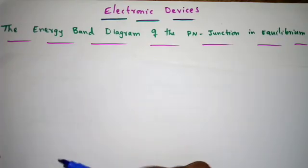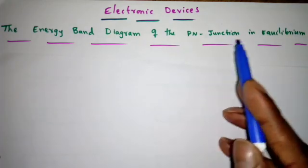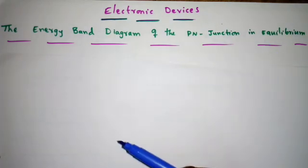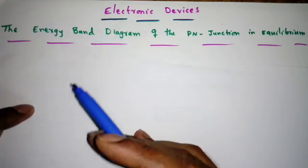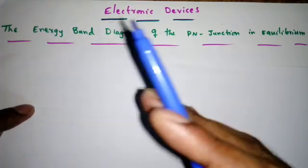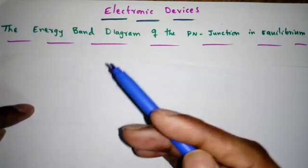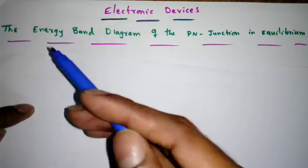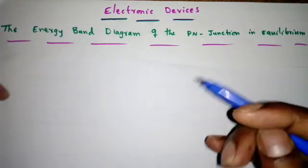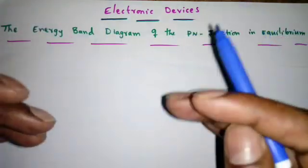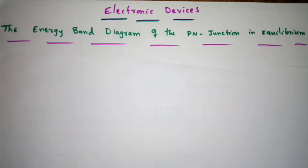In this lecture we will discuss the energy band diagram of the p-n junction in equilibrium. We will first revise the energy band diagram of an intrinsic semiconductor, then the p-type and n-type semiconductor, and finally see what happens to the energy band diagram when we form a p-n junction.